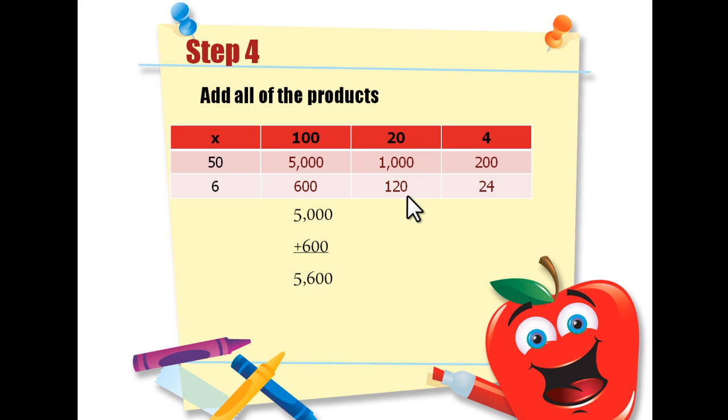In step 4, you're going to add all the products together. We're going to start by adding the columns together. 5,000 plus 600 equals 5,600. 1,000 plus 120 equals 1,120.